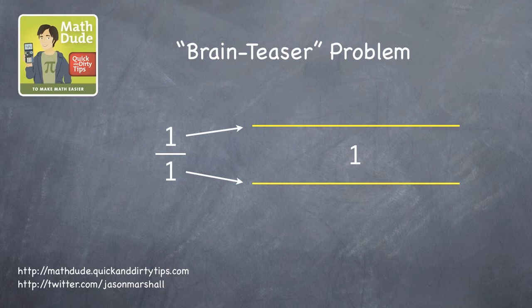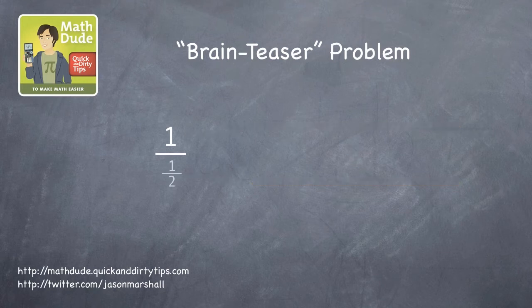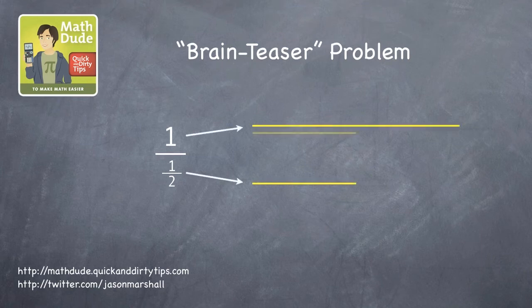In other words, if the numerator and denominator both represented the length of something, let's say a pencil, it would take 1 of the bottom pencils to equal the length of the top 1. Okay, now let's look at the case when the denominator is 1 half instead of 1. How many times does 1 half go into 1? In other words, how many halves does it take to make a whole? 2.